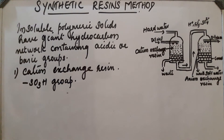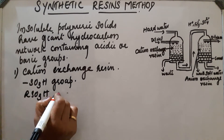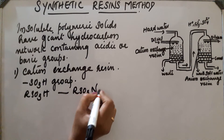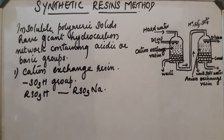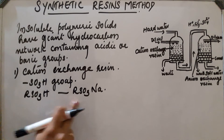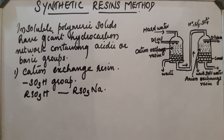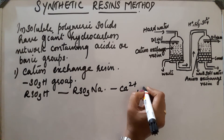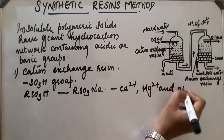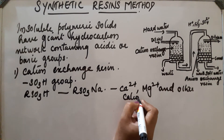Hard water, from which we are removing the hardness, is passed through a bed of this cation exchange resin. First, RSO3H is converted to RSO3Na by treating with NaCl solution. When this hard water is passed through this resin, the Na+ ion present in it is exchanged by Ca2+ and Mg2+ and other cations present in the hard water.